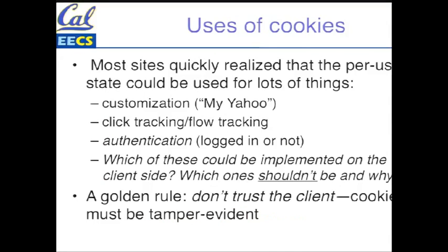As soon as cookies were invented, people started using them for customization, flow tracking, click tracking, and authentication — once you log in, a cookie is issued indicating you're authenticated, so you don't have to log in for every new page view. In software as a service, you can never trust the client — the client could be a bot, an outdated browser, or a script running awry. So a cookie has to be constructed in a way that you can verify it's legitimate and hasn't been tampered with. When we talk about the Rails framework, we'll see how Rails does that for you.